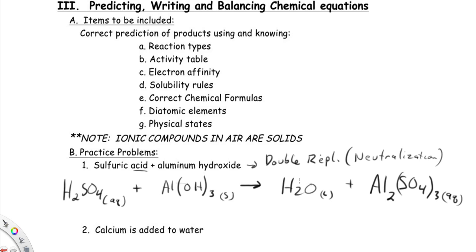Now we need to balance this. If I just start with aluminum, that looks like an easy thing to start with. I need two aluminums over here. So I'm going to put a two here. Now this may not work out to be balanced, but we'll see. And then I'm going to go with sulfate. I've got three and I need three over here. So I've got three sulfates on each side, two aluminums on each side.